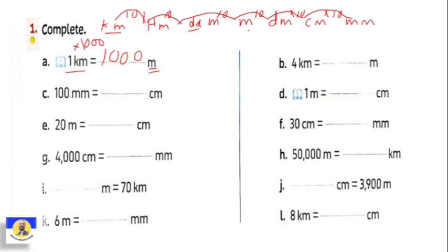Letter b: four kilometers. One kilo has one thousand, two kilo is two thousand, three kilometer is three thousand, four kilometer — we multiply by one thousand — so it equals four thousand meters.